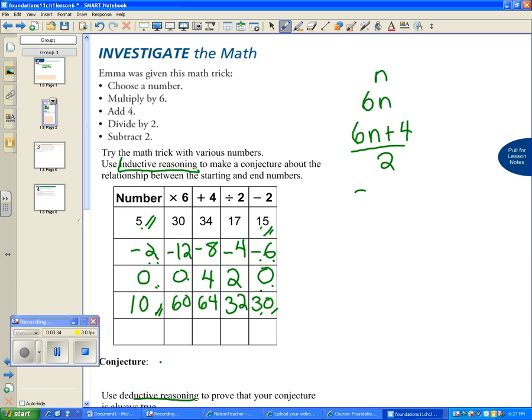This is 3n plus 2, and now we are going to subtract 2. We're left with 3n, or the ending number is 3 times the starting number. So inductive reasoning: we did examples and found a pattern. Deductive reasoning: we started with a fact, provided given information, and came to a conclusion.